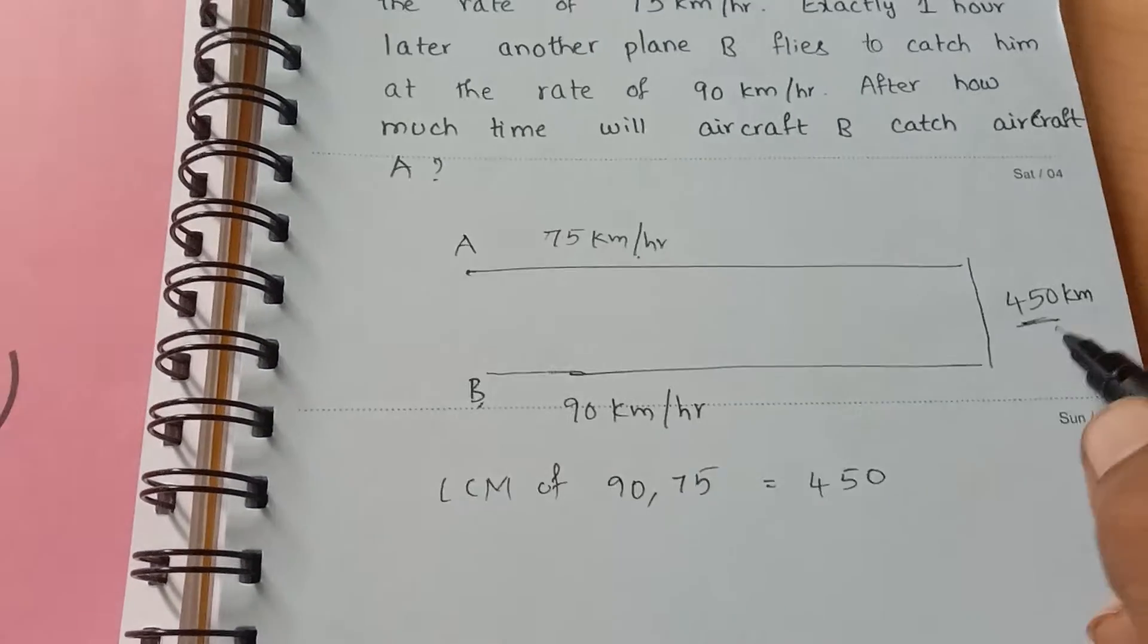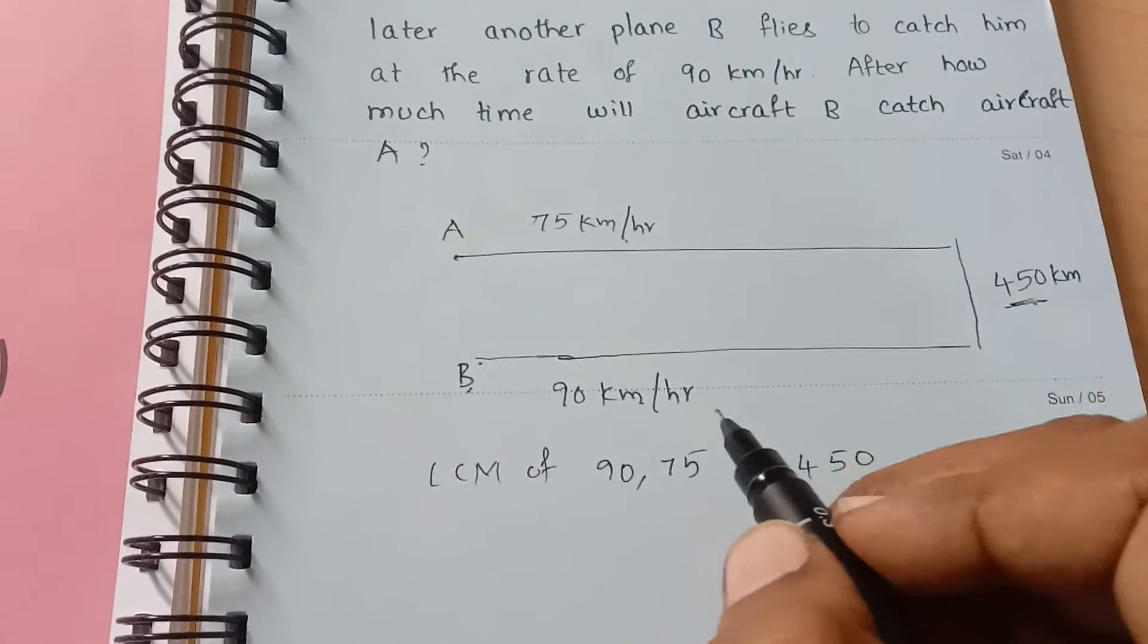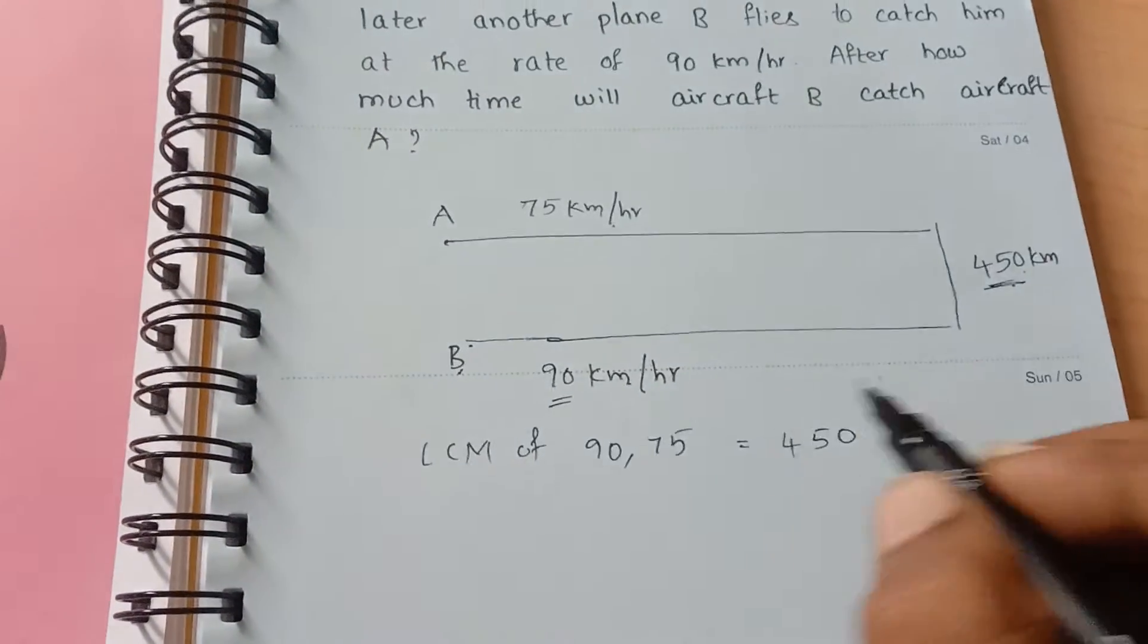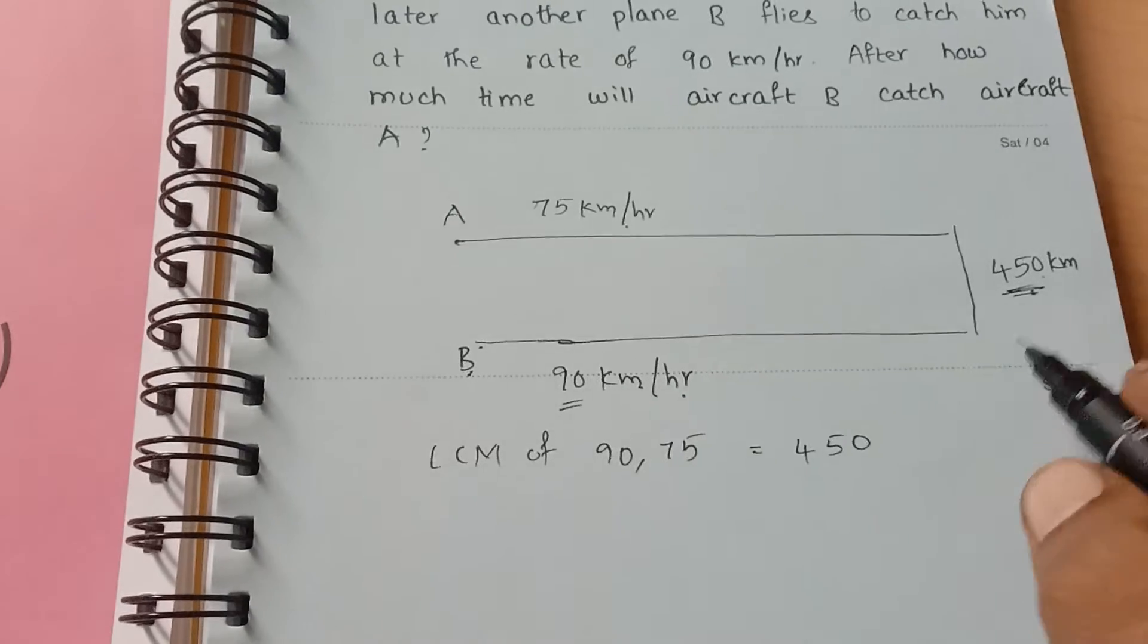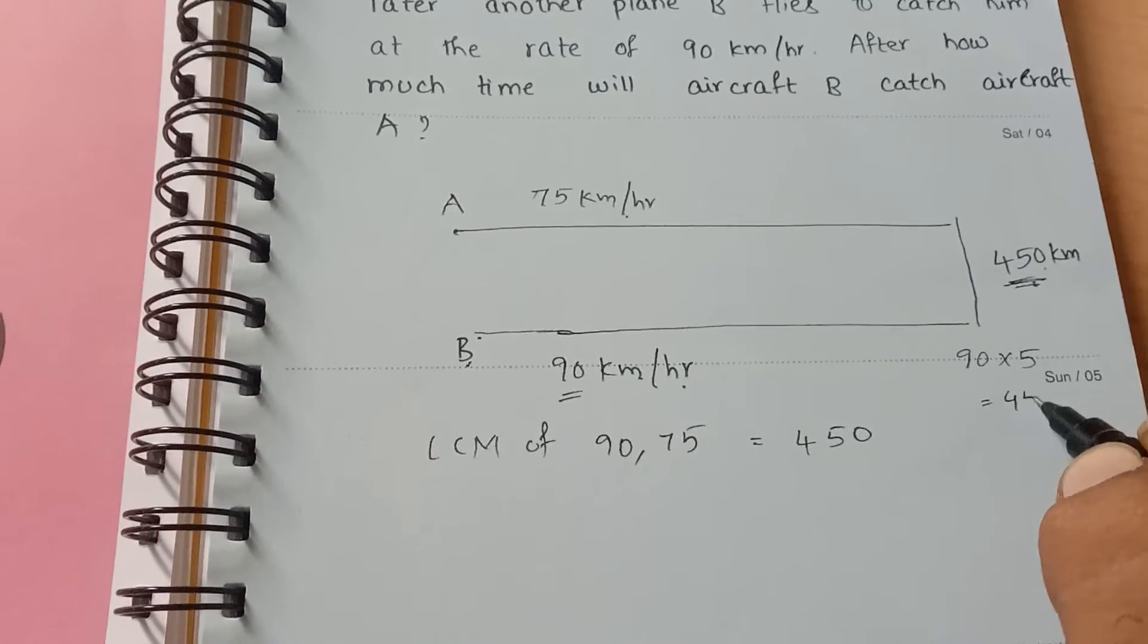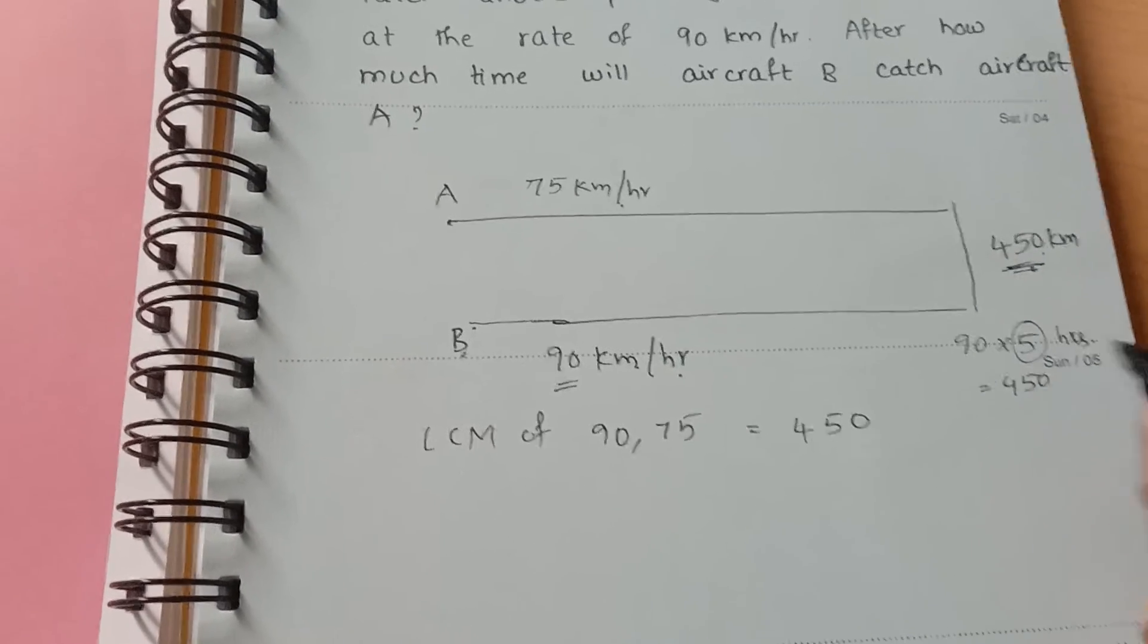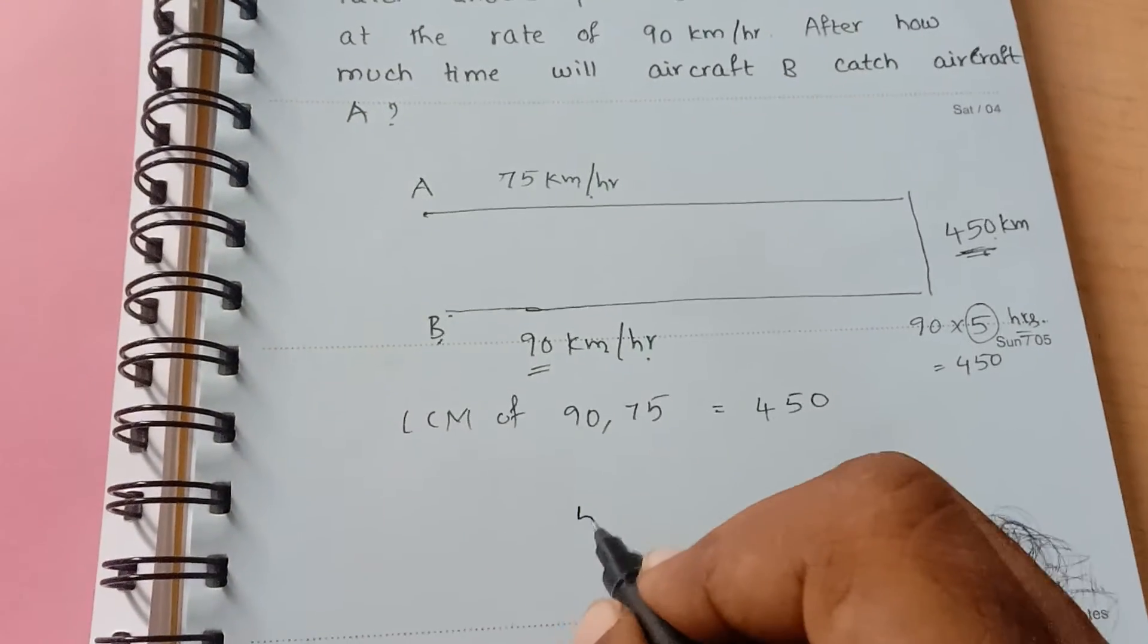So for 450 km, what is the time taken for B to reach 450 km? For 90 km it is taking 1 hour. For 450 km, 90 into 5 equals 450. That means for 5 hours it travelled. So the answer is 5 hours time.